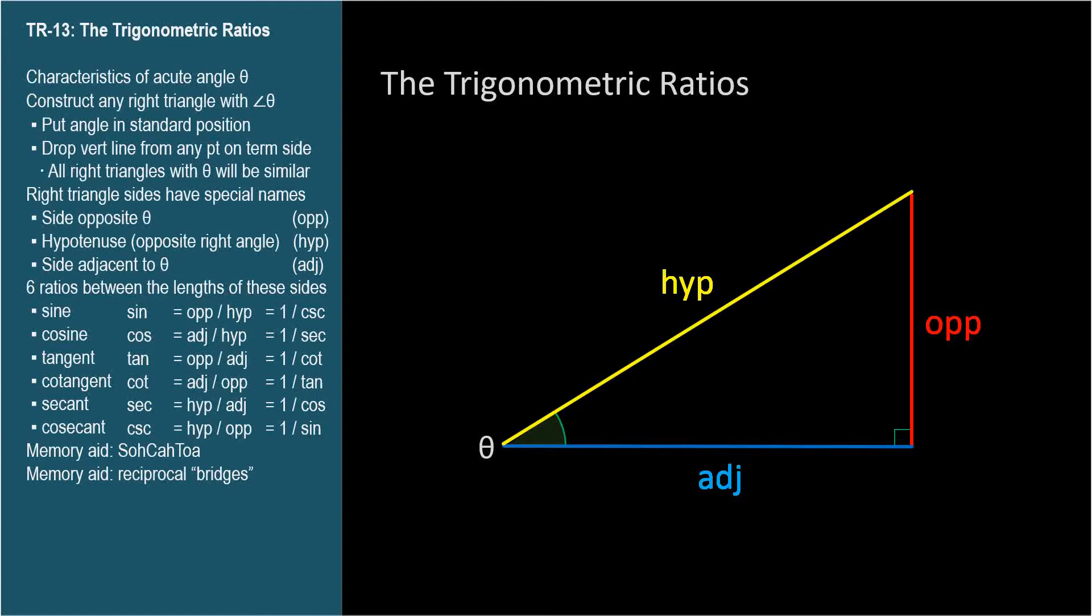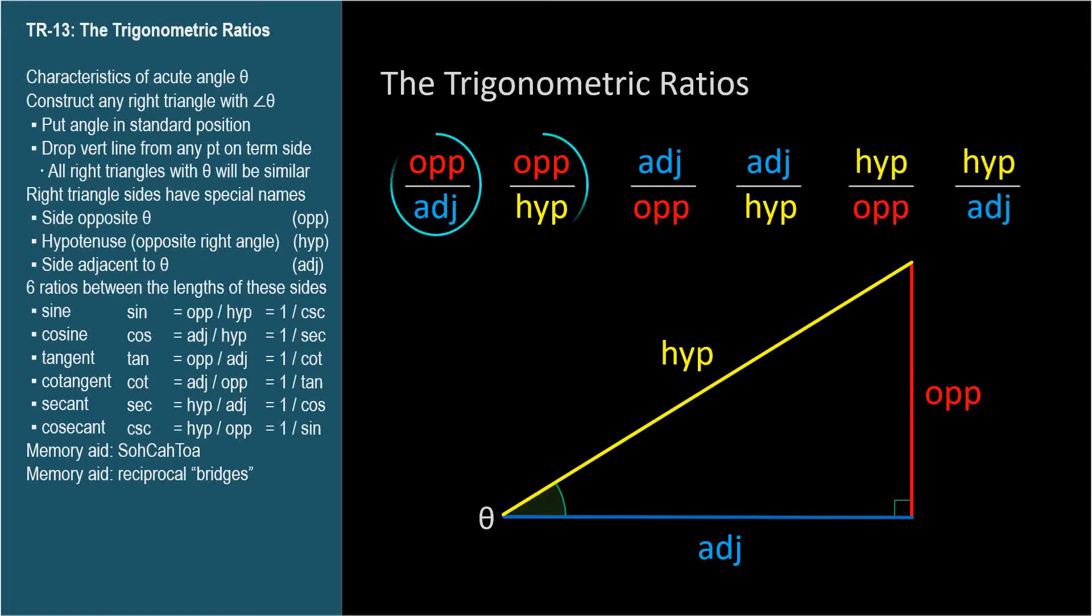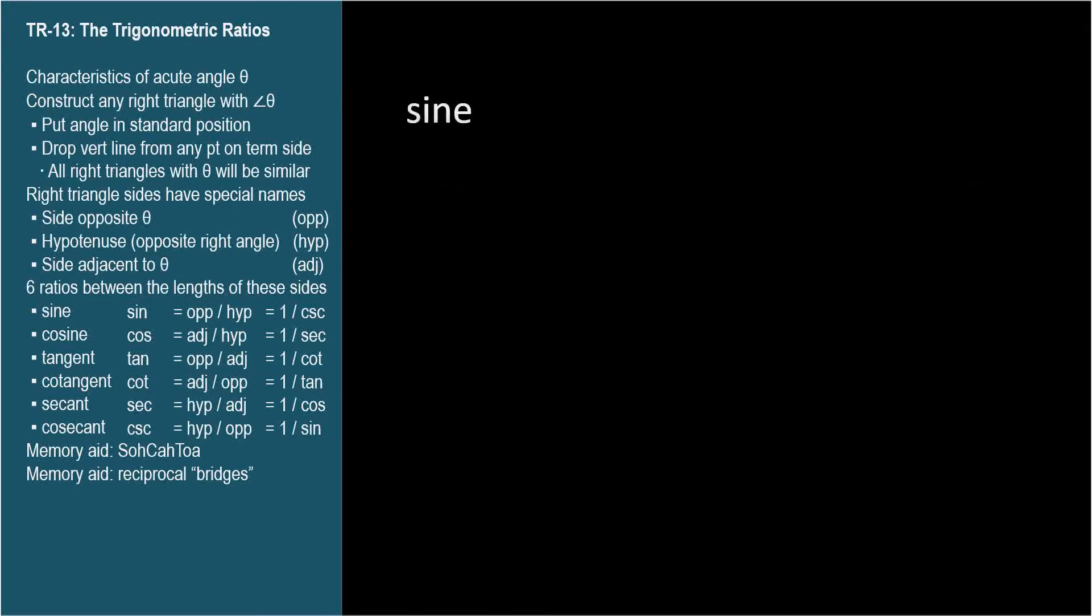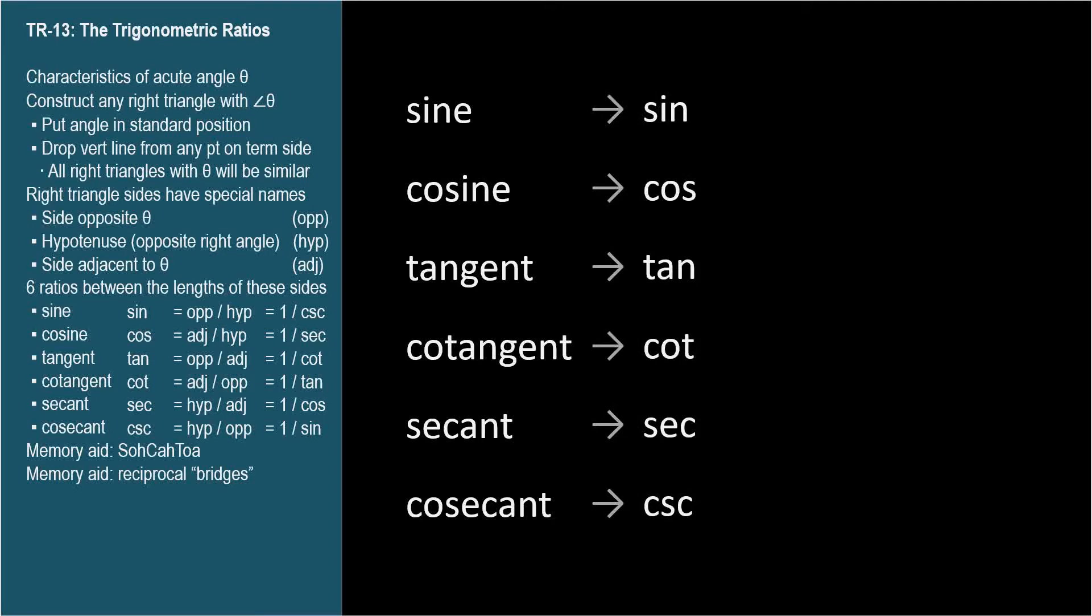The trig ratios are simply the ratios between the lengths of these three sides. There are only six possibilities: opposite divided by the other two, adjacent divided by the other two, and hypotenuse divided by the other two. Here are the names of these six ratios: sine, cosine, tangent, cotangent, secant, cosecant. I try to emphasize how little memorization is needed for trigonometry if you understand the basic concepts. But you should memorize these six names in this order. They all have three-letter abbreviations which correspond to the first three letters of their name, except cosecant's abbreviation can't be COS since that's already been taken by cosine. So cosecant is abbreviated CSC.